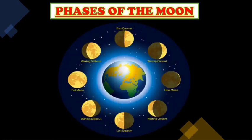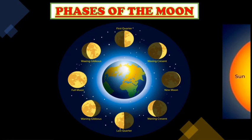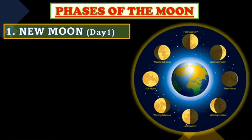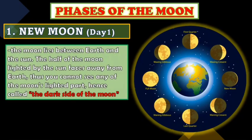The Moon shines by reflecting sunlight from its surface. As the Moon orbits Earth, it appears to have different shapes — these are called the phases of the Moon, or the faces of the Moon, which are the changing appearances of the Moon as seen from Earth. The first phase is the New Moon, on day one. The Moon lies between Earth and the Sun. The half of the Moon lighted by the Sun faces away from Earth, so you cannot see any of the Moon's lighted part — hence called the dark side of the Moon.